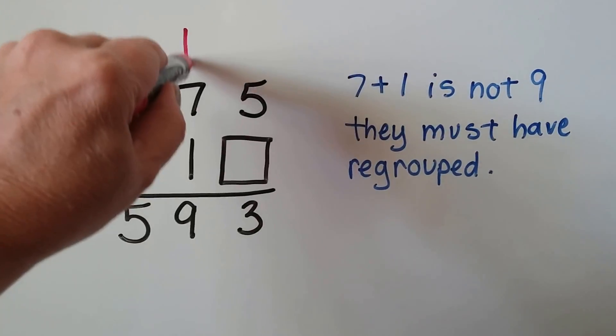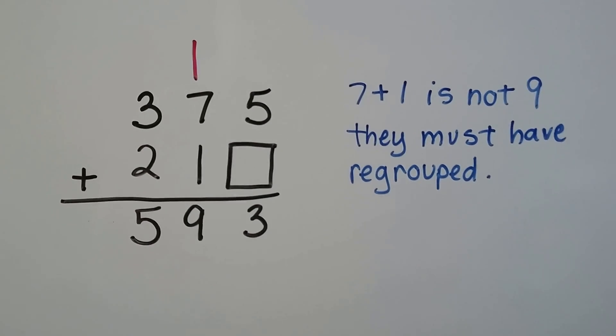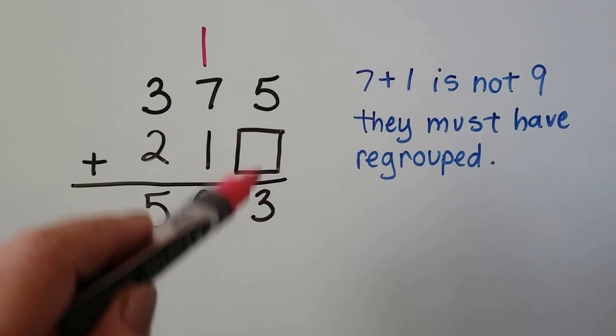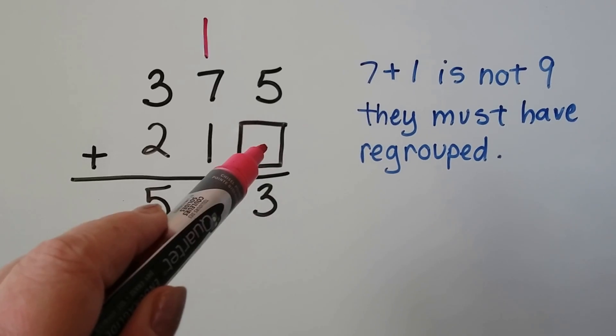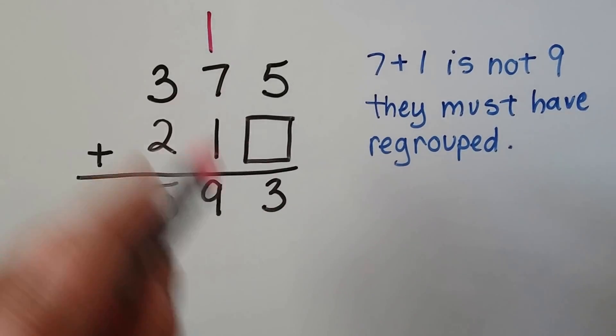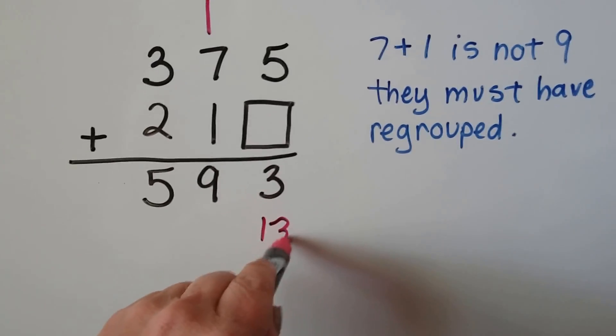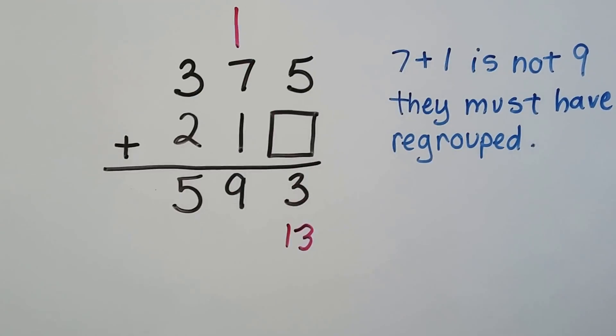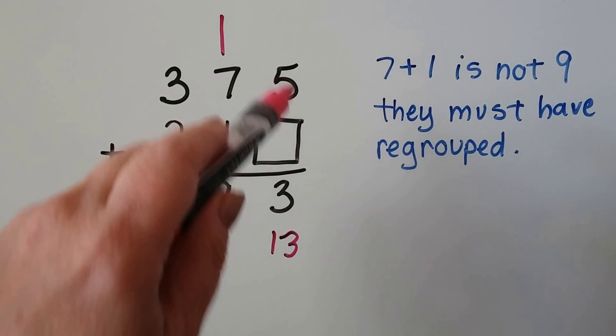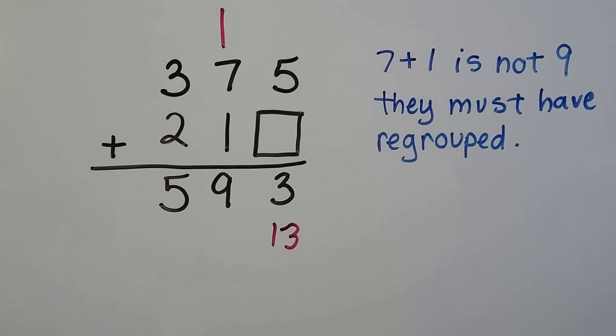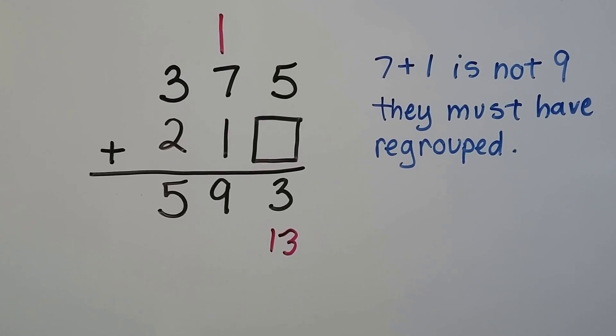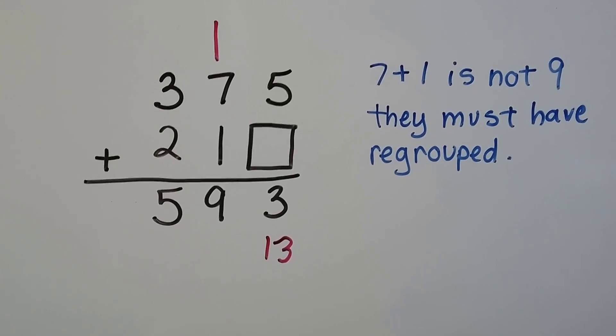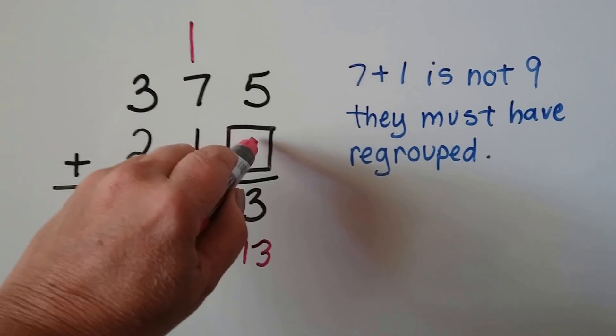Because this 7 plus this 1 is a 9, they must have regrouped and had another 1 here. That means that 5 got added to a number that made 13. And because we couldn't put the 1 down here in the 1s place, we had to regroup it to the tens place. So 5 plus something is 13. That makes more sense. 5 plus what is 13? Do you know? 5 plus 8.